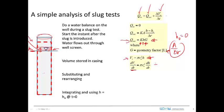Substituting these terms into the water balance gives us the governing equation. The rate of change of head in the well with time equals a negative constant times H — where the constant includes K, the geometry factor G, π, and rw². The negative sign means that the greater the head, the more rapidly the head will be falling.